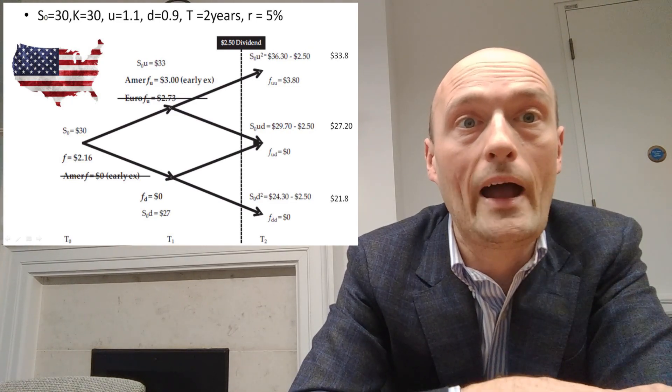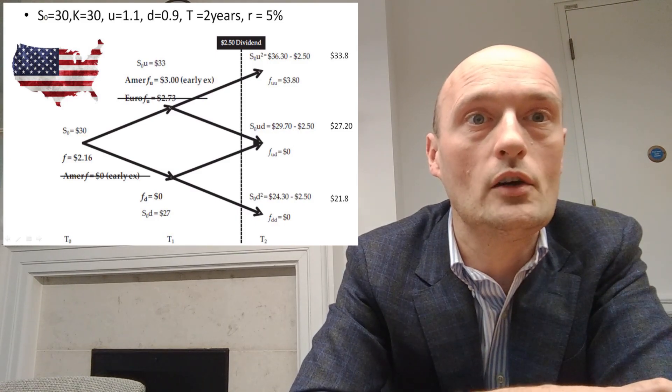That shows how you handle dividends in a binomial tree. We had two complications: the option is American, and the underlying pays a dividend. As you can see, the binomial tree is flexible enough to handle both. In our next video we'll learn when it's optimal to early exercise an American option, since people are often confused about whether they should or shouldn't early exercise. That's it for this video — see you tomorrow!